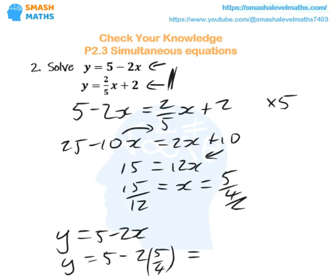So that's 5 minus 10 over 4, which turns out to be 5 over 2. And there we go.